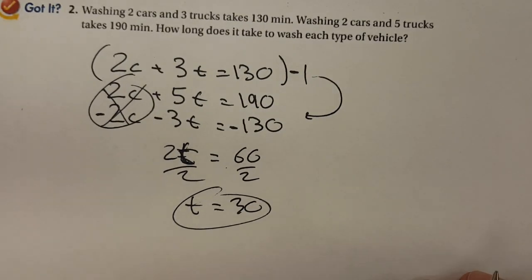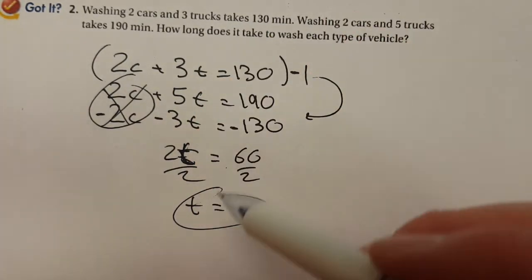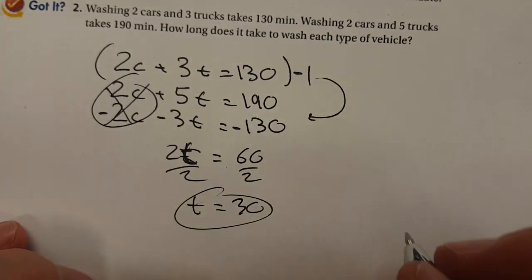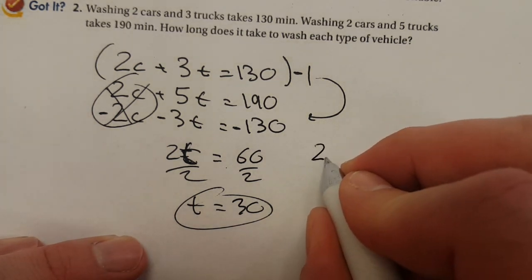Okay, a little bit of mental math here. Well, not really mental math, just eeny, meeny, miny, moe. You can pick any of these equations now. Now that you know the time it's gonna take you to wash trucks, you can use any of these to find the amount of time it's gonna take you to wash cars. I want to pick the top one.